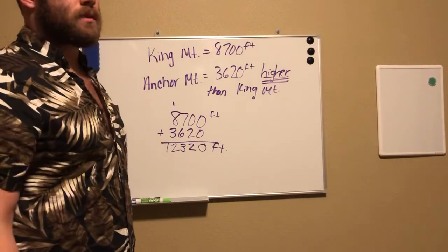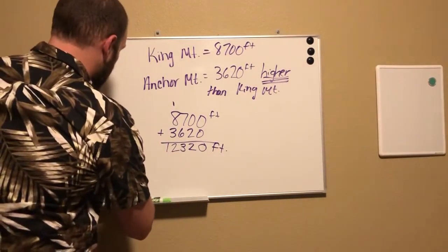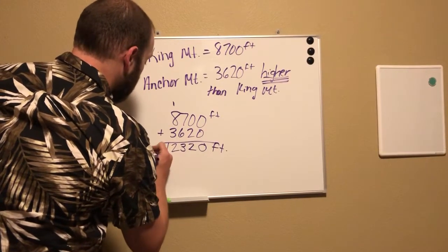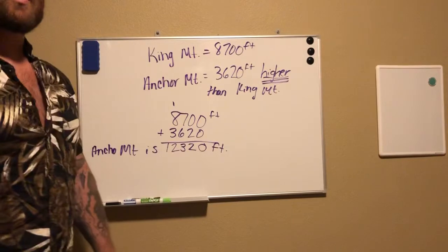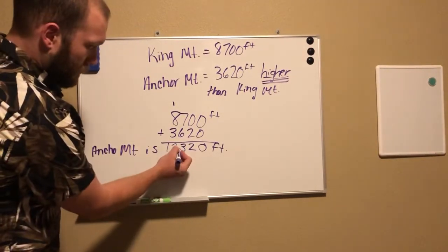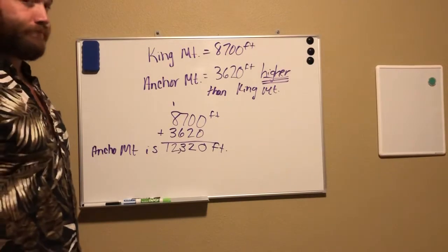What's twelve thousand three hundred twenty feet? Anchor Mountain is twelve thousand three hundred twenty feet. There you go.